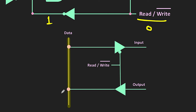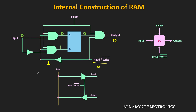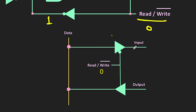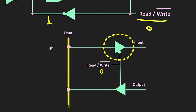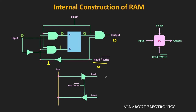When the read signal is 1, the CPU can read data from the data line, while the top buffer remains deactivated so content on the data line does not reach the input side. When the read signal is 0, the top buffer gets enabled and the bottom buffer gets disabled, so whatever data is available on the data line becomes available on the input side — meaning the CPU can write data into the binary cell.